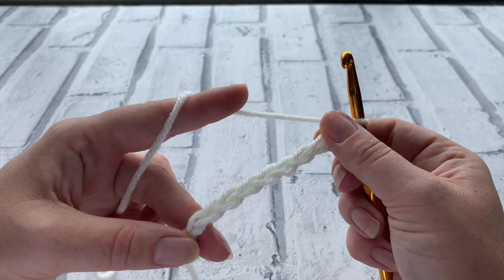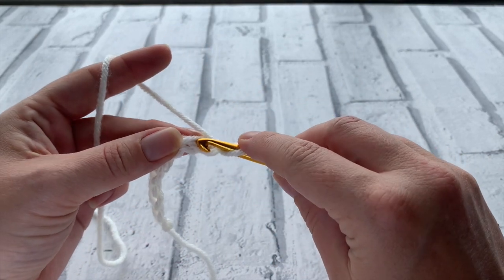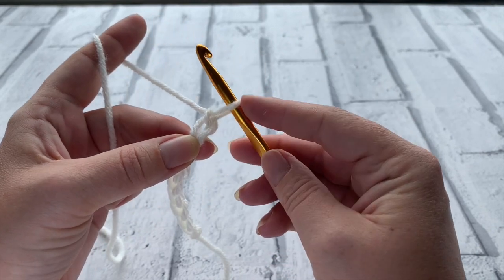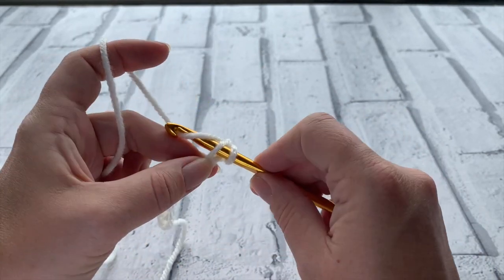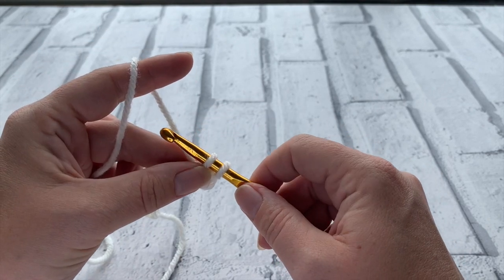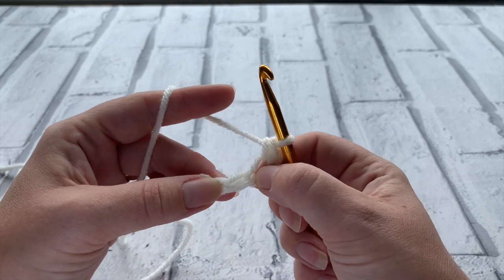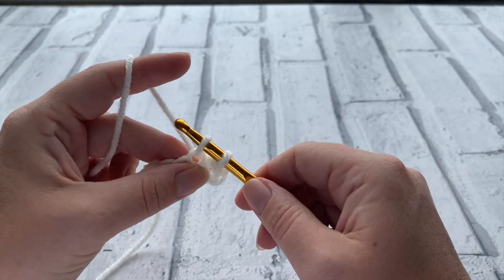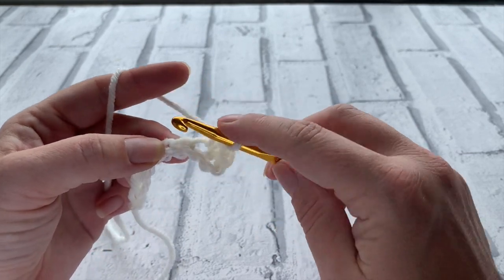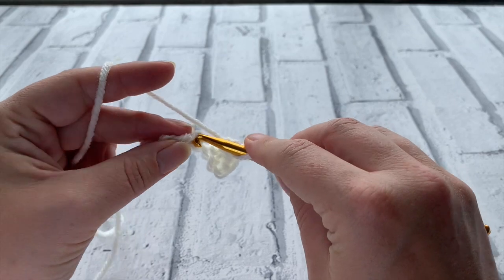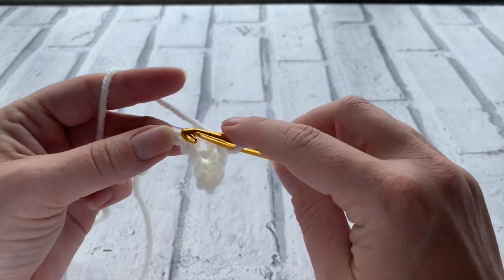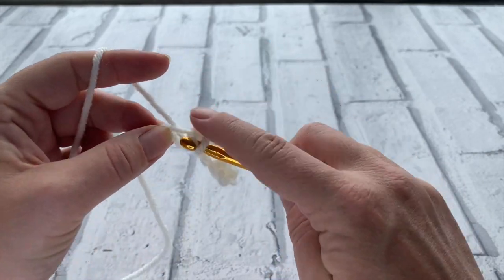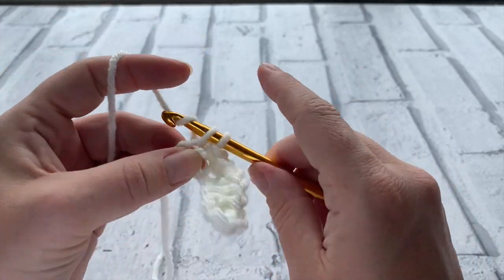We're going to double crochet or in US terms single crochet all the way back down this chain. To do that we simply insert our hook under that first loop of the chain. We can't work into this very first one and this one doesn't count. So we're going to pop our hook into that first chain, yarn over to bring that loop up, yarn over and pull through. Ignoring that hole we're going to work into that next chain there, again just going under that top loop, yarn over to bring that first loop up, yarn over and pull through both loops on your hook. I'm just going to continue to double crochet or single crochet in US terms, all the way down till we reach the beginning of this row.